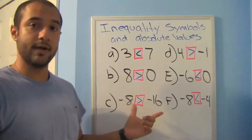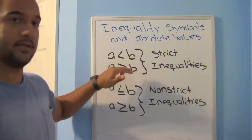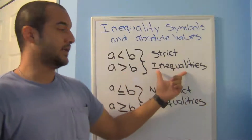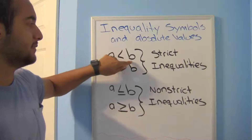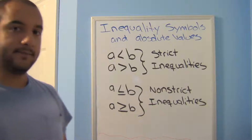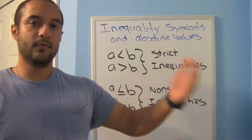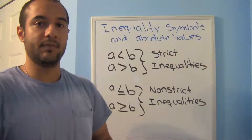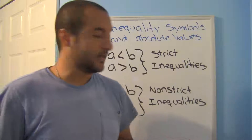Here are your answers — hope you got them all right. You're looking at a is less than b or a is greater than b. These are known as strict inequalities. They're strict because a is less than b means it cannot include b. For example, if you say 'I need everybody that is less than 55 years old,' nobody in that group can be 55 — everybody has to be strictly less than 55.